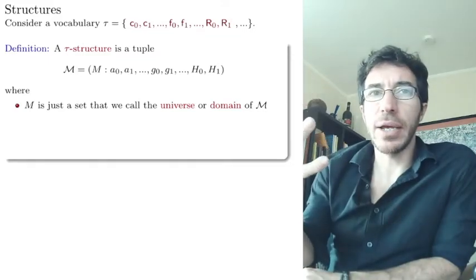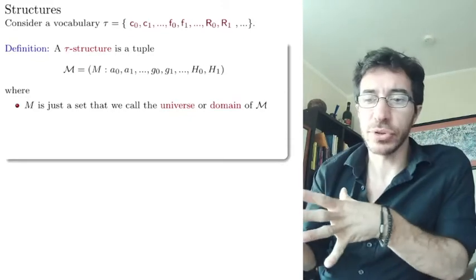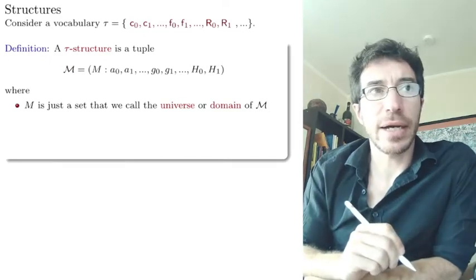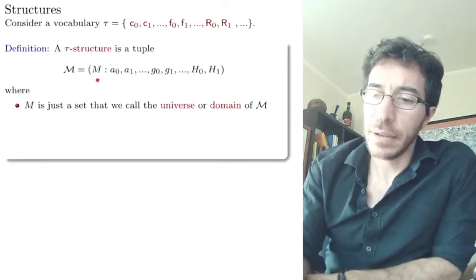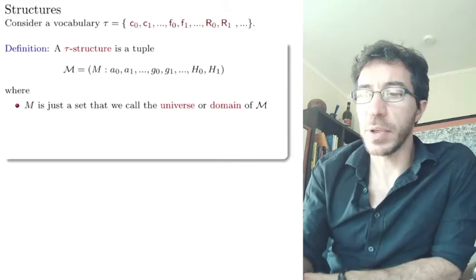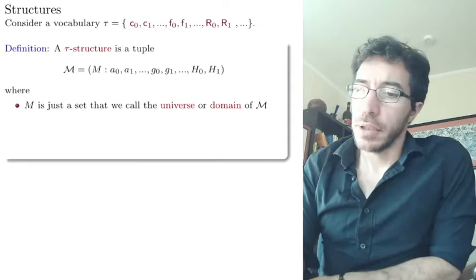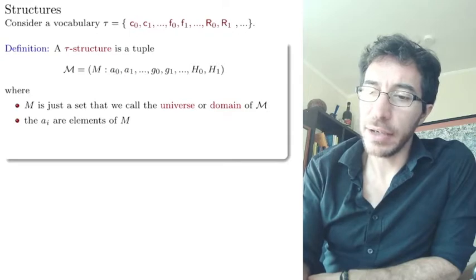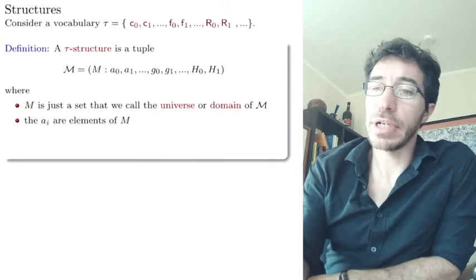And a τ structure is going to be a way where you can interpret all these symbols. A space where you can interpret the symbol. So calligraphic M is going to be a τ structure. It's going to be of this form. It's going to have a set M, which is just a set that we call the domain for the structure or the universe. Sometimes you call it the universe, sometimes the domain. So this is your universe of objects. Then inside M, we have some elements A0, A1, which are just elements of M, which are going to be representing the constants.